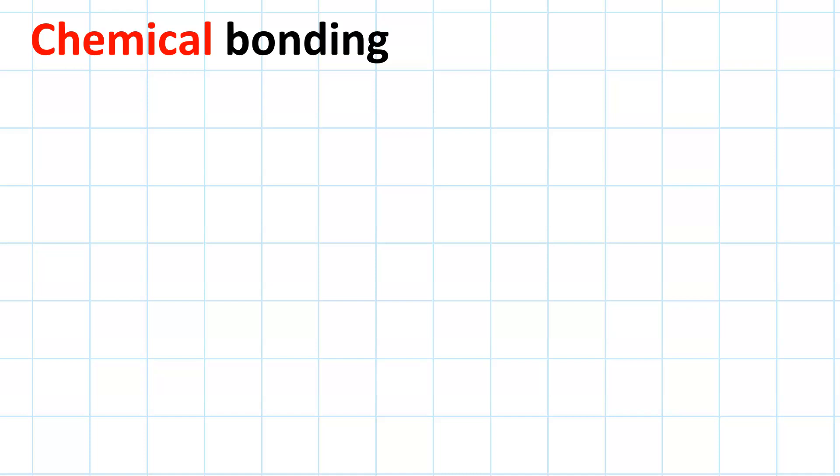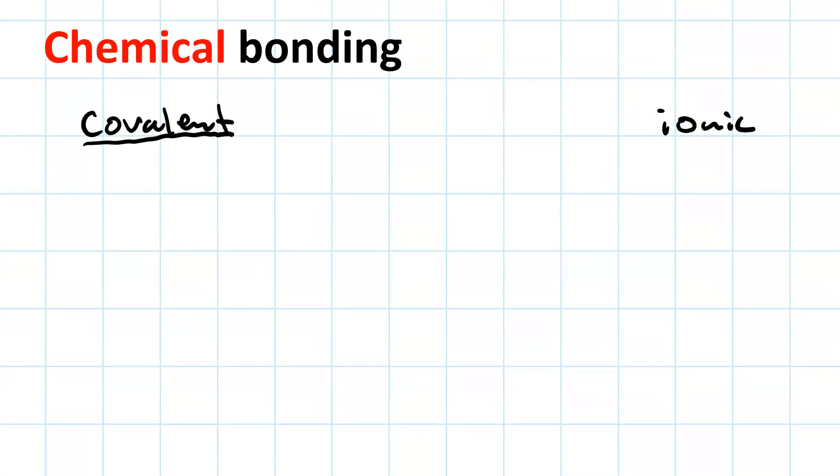A quick review of chemical bonding for organic chemistry. Bonding can be covalent or ionic. Whether you get a covalent or an ionic bond depends on the types of atoms involved in the bond.